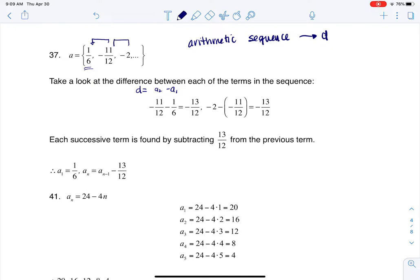I could also subtract a sub 2 from a sub 3, but it's a constant difference, that's the whole point of an arithmetic sequence, so I find out that d is negative 13 over 12. There we go, I can write that correctly.